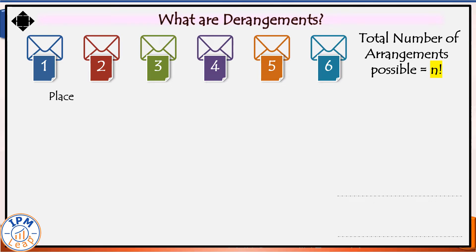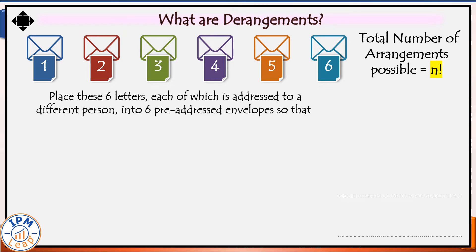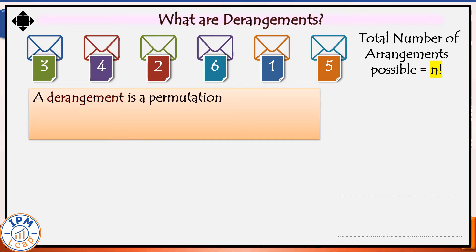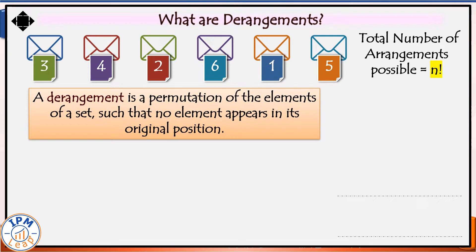For example, let us suppose we have six letters and six corresponding envelopes, each addressed to a different person. You can see there is color coding — this will help you visualize which letter belongs where, like the orange letter in the orange envelope. If I move all these letters from their original position such that not even a single one of these six letters occupies their corresponding envelope, meaning all the letters are placed wrongly, such an arrangement is called a derangement. In mathematical language, a derangement is a permutation of the elements of a set such that no element appears in its original position.